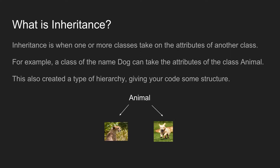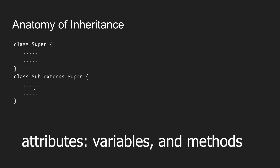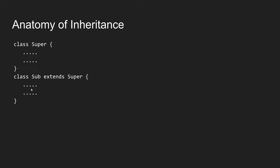This also creates a hierarchy. You have Animal as a class, and then two subclasses — Dog and Cheetah. The cheetah has stuff unique to it and the dog has stuff unique to it, but they also share stuff from the Animal class. This is how inheritance works: you have a superclass — the class whose attributes will be inherited — and then you have subclasses like Dog and Cheetah that inherit those attributes.